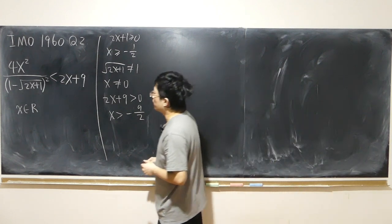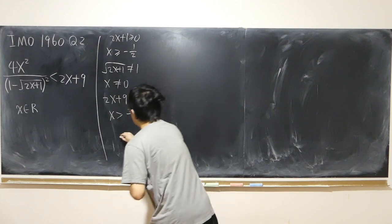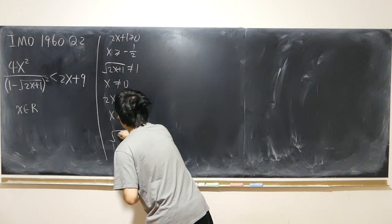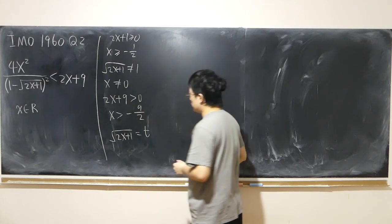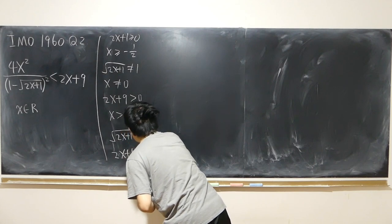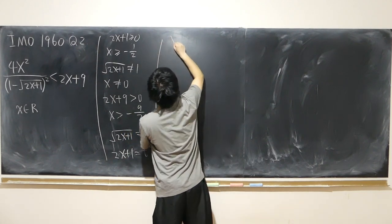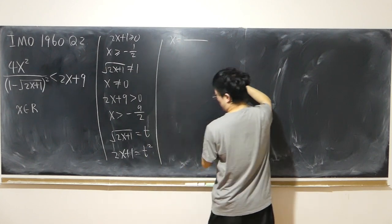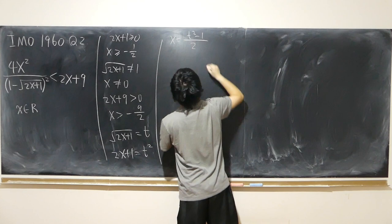And since we want to simplify everything, so perhaps I should make substitution to square root of 2x plus 1 equal to t. And so therefore, 2x plus 1 is equal to t squared.